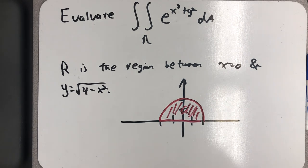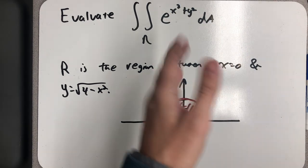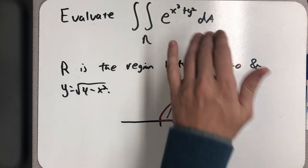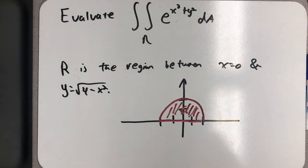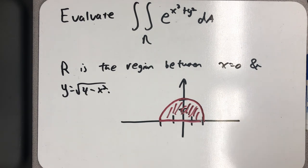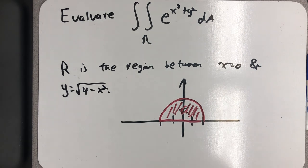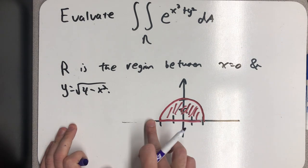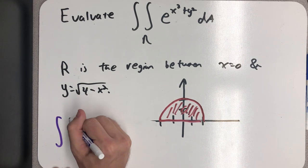Well, my bounds for integration, if I was going to think rectangularly, would be from 0 to this, but then I look at this, and that's not an integral I want to mess with with respect to x or with respect to y first. So I'm thinking we're going to make this a polar integral. For two reasons.